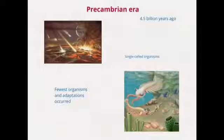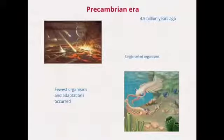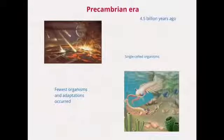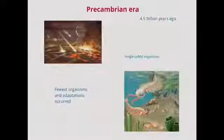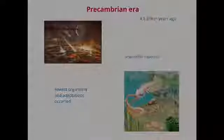We are going to start with the Precambrian era. It starts with the beginning of the Earth, being the longest of the four periods. Fewer organisms and adaptations occur at this era. Most of the organisms were bacteria, later single cell. At the end of this era, most complex organisms appeared.